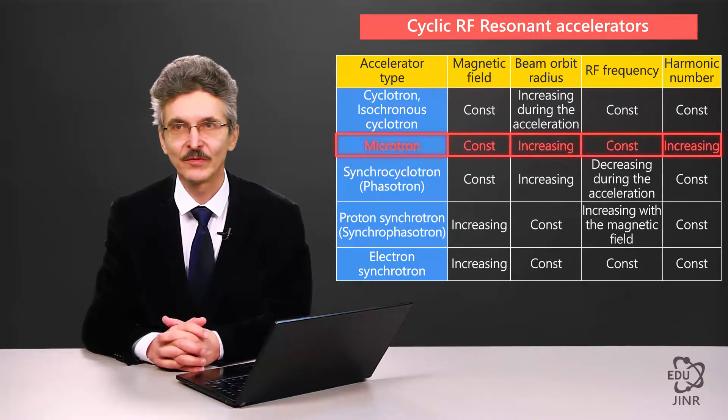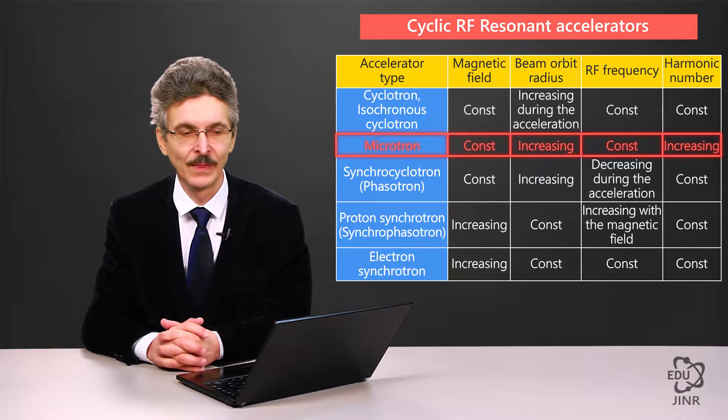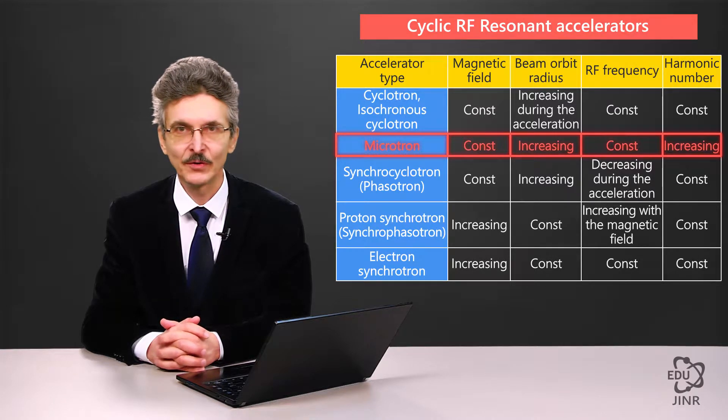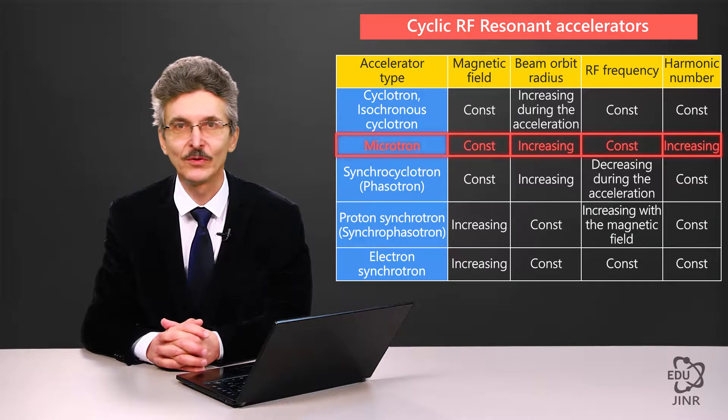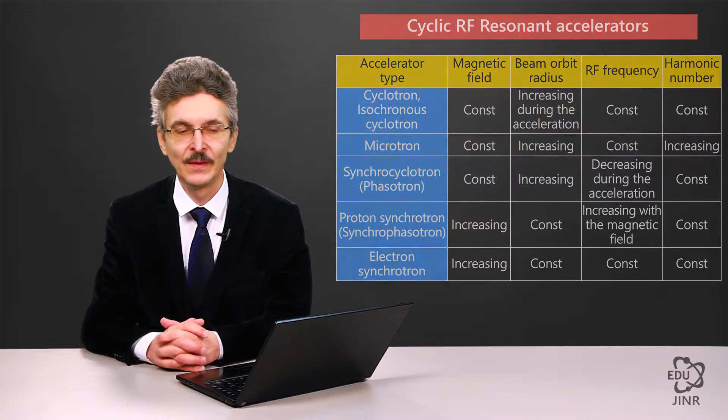This corresponds to a short wavelength. The operation principle of a microtron was proposed by a member of the USSR Academy of Sciences, Vladimir Wexler, in his first article on the phase stability principle.